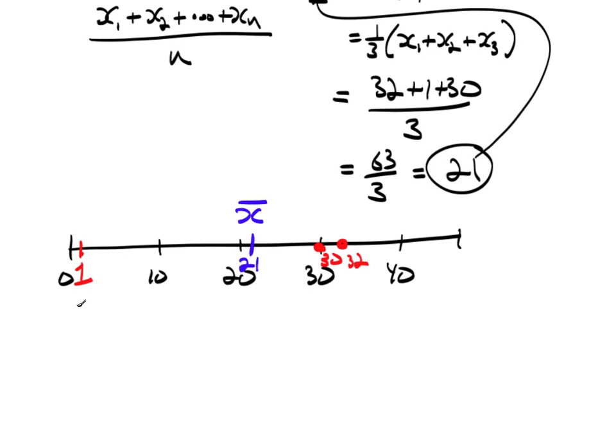If I take each value, so I could take 1, subtract from it the average, 1 minus 21, that equals negative 20. The next value is 30. 30 minus 21, that equals 9. And then I have here 32 minus 21, that equals 11.